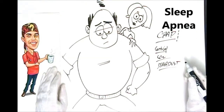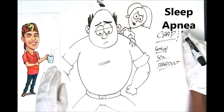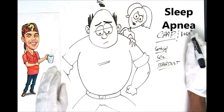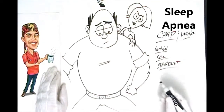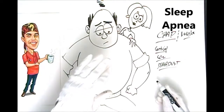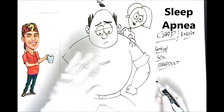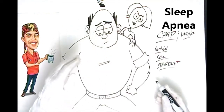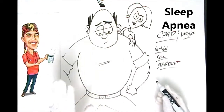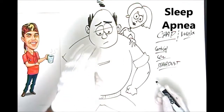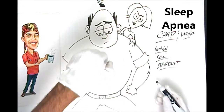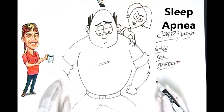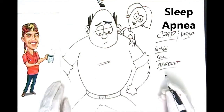Another option is to see an ear, nose, and throat specialist for something called a uvulopalasty. Basically, that means trimming back some of the palate so there's less obstruction in the way, allowing air to glide easily through your mouth or nose and down through your trachea into your lungs.